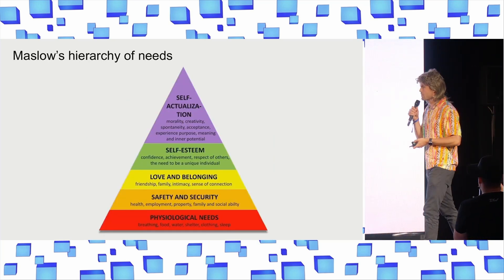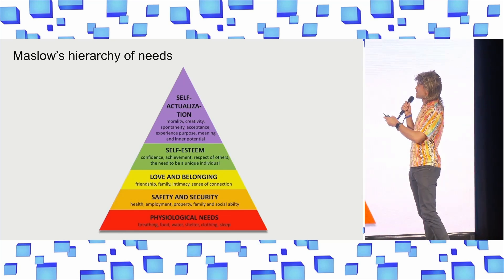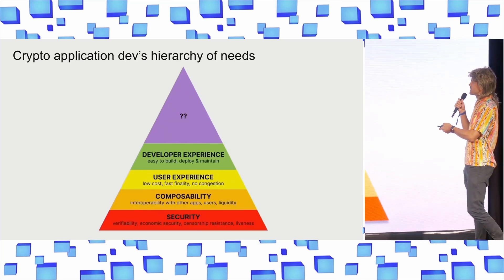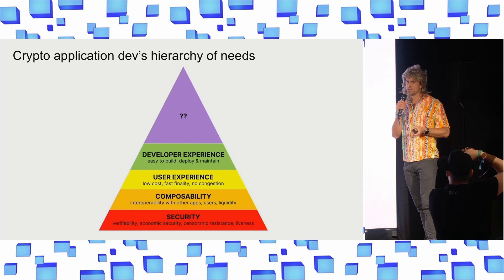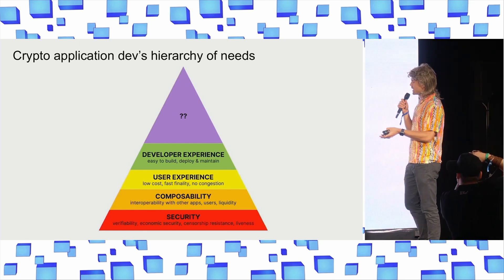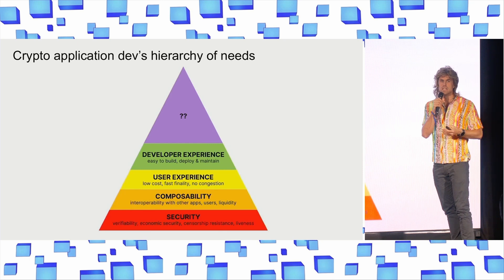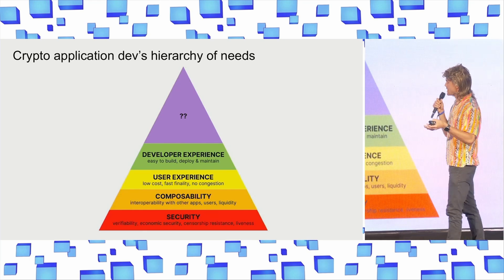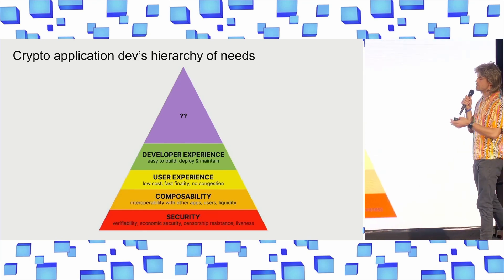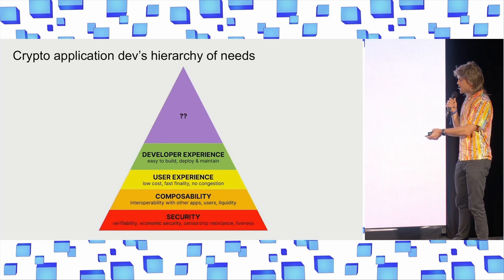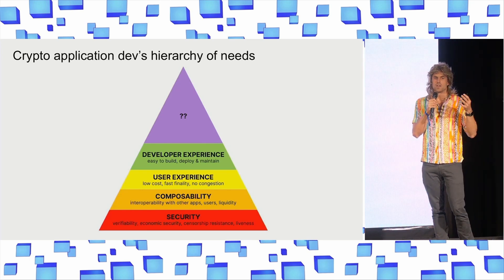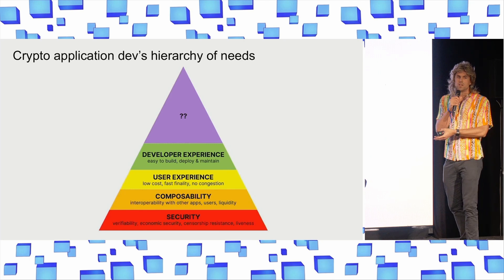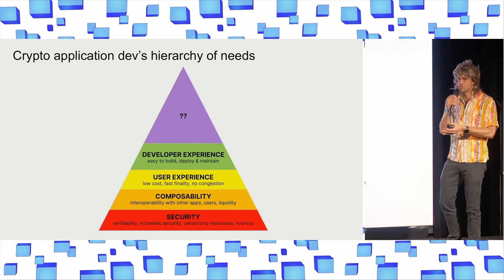So to introduce this concept, I'm going to borrow something from psychology but adapt it to crypto. So instead of having Maslow's hierarchy of needs, we have the crypto application developer's hierarchy of needs. And the idea here is that there's a core set of needs that an application developer has to have fulfilled from the infrastructure they choose to build on. At the bottom, we have security — verifiability, censorship resistance, liveness — all the things you expect when you're building an application on a blockchain. If you don't have these things, then what's the point of even building Web3? You should just build a Web2 application.